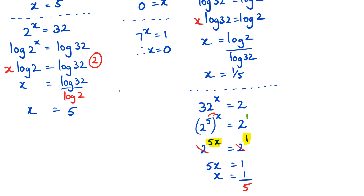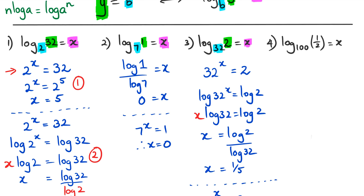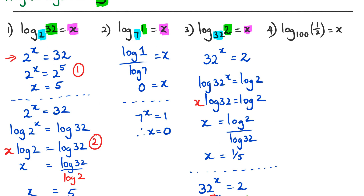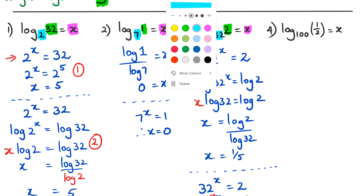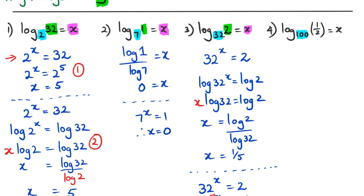That's another way of doing it without a calculator — showing how to get 1/5 both with logs and without. This is stuff from level 1, just reversed with logs added. For question four, the base is 100, the power is x, and the answer is 1/2 — though I actually made a mistake there.